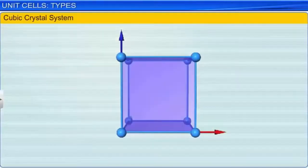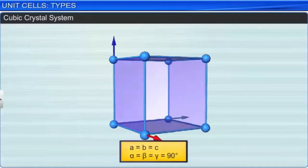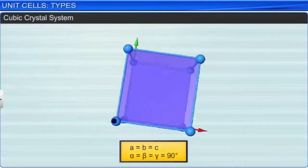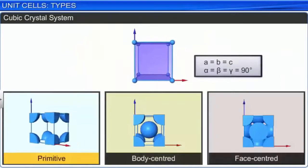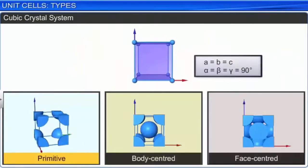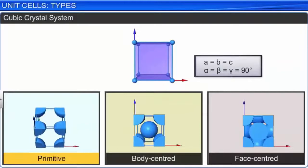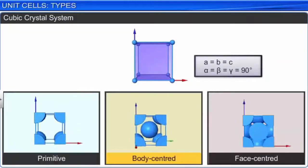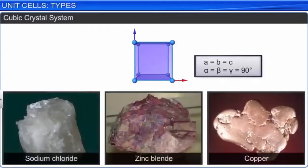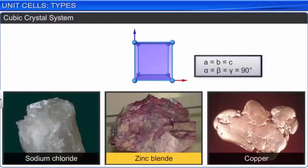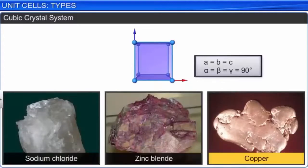In a cubic crystal system, all three axes are of equal length and are at right angles to each other. The possible lattices are primitive, body-centered, and face-centered. Sodium chloride, zinc blende, and copper are well-known examples of this type.